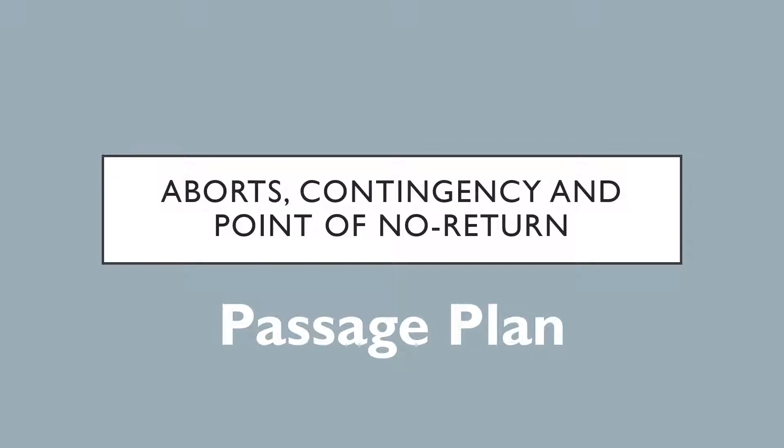The passage plan that you use on the ship should ideally identify some of these points which are known as the abort point, or the contingency point, or the point of no return. Students are often asked about these in the oral exam to define them, and I thought I'll make a short video telling you what these all mean and why they should be marked in the passage plan.